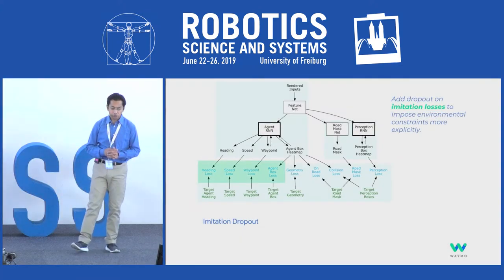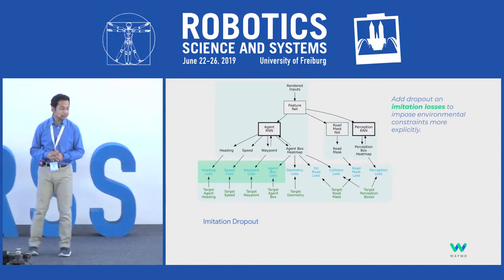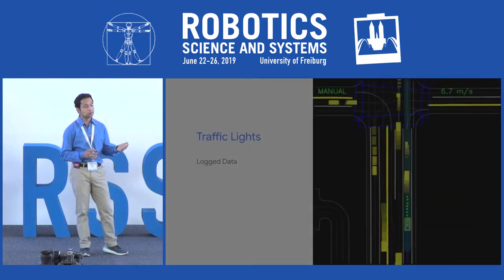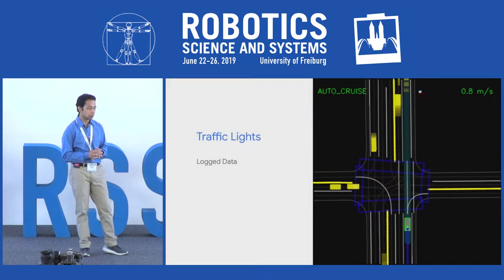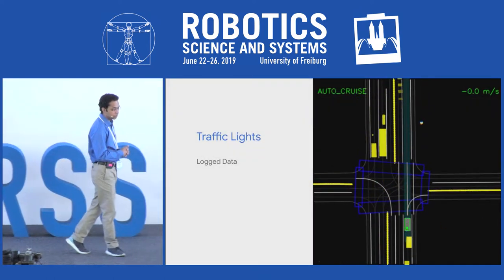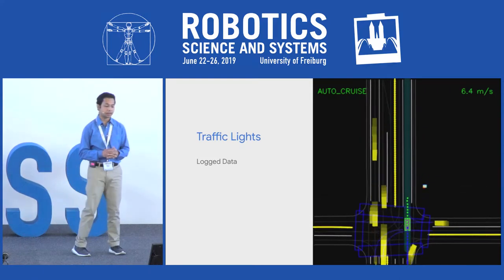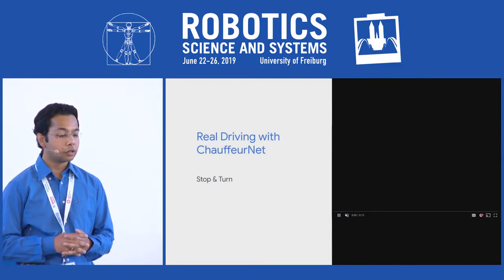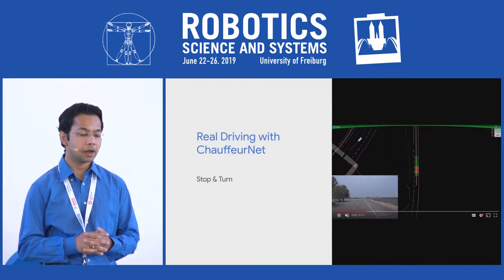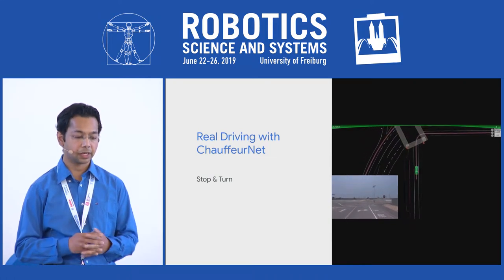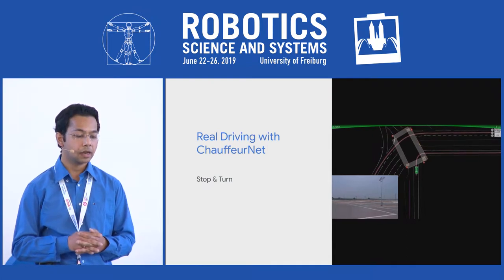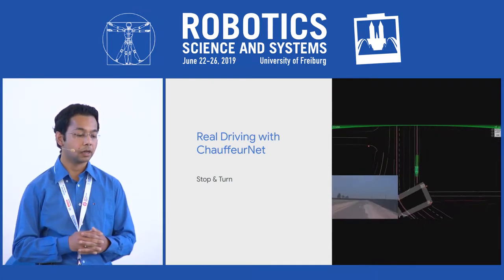We also introduce imitation dropout, which lets the network explore alternative futures constrained only by environmental constraints, going beyond pure imitation. In simulation, the agent approaches a red traffic light, continues when it turns green, and makes smooth progress. We also deployed the model on a full-size Chrysler Pacifica at our test track, demonstrating smooth driving including a full stop at a stop sign and a smooth right turn.